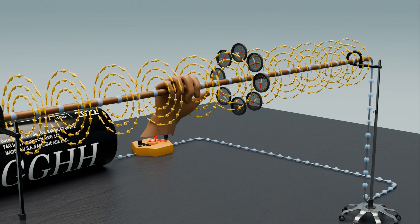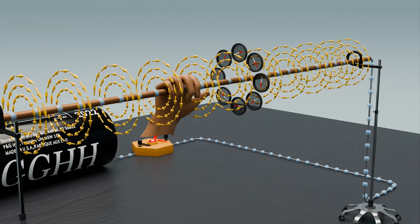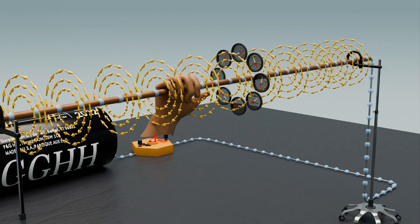Each compass needle, which is essentially a small magnet, aligns itself tangentially to the magnetic field lines. This means the needles will point in a circular pattern around the wire.